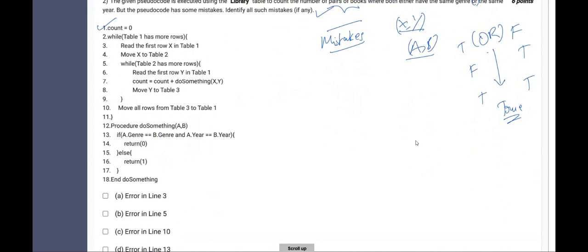Let us see the lines which we have to check for. Line 3 is line 3 mistake? No, line 3 is not a mistake. Line 5 while table 2 has more rows. Yes, line 5 is a mistake because we will have to check for table 1. Here we are picking a card from table 1 in the line 6. That means, we must check whether table 1 is empty or not in the line 5. Therefore, line 5 is a mistake error in line 5.